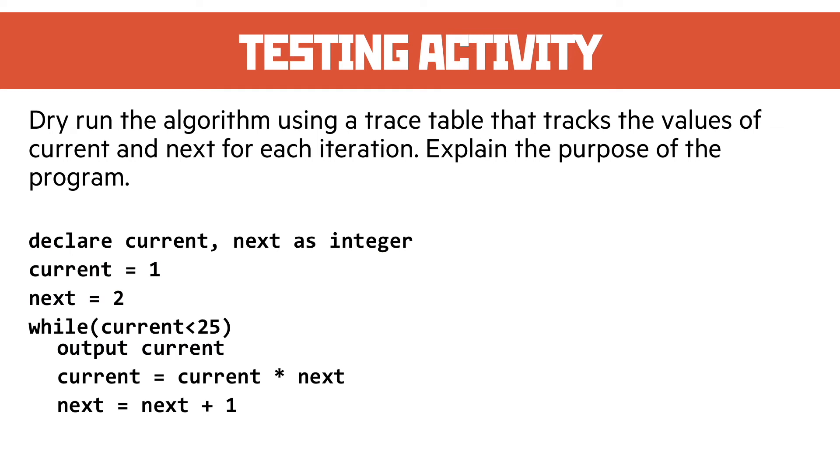Dry run the algorithm using a trace table that tracks the value of current and next for each iteration - they're variables that are declared in that first line. Explain the purpose of the program. Alright, well let's have a look and see what it does.